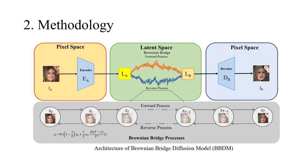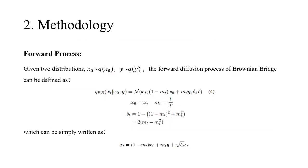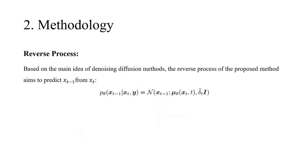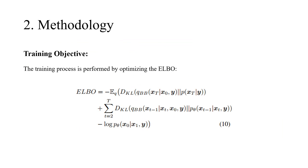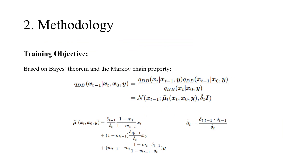Based on the Brownian Bridge stochastic processes, our method contains a forward process and a reverse process that are pinned to the distribution of domain A at time 0 and the distribution of domain B at time T. The reverse process is learned by aligning it with the forward process through optimizing the evidence lower bound. With some reparameterization techniques, we can simplify the training objective as a reconstruction loss.